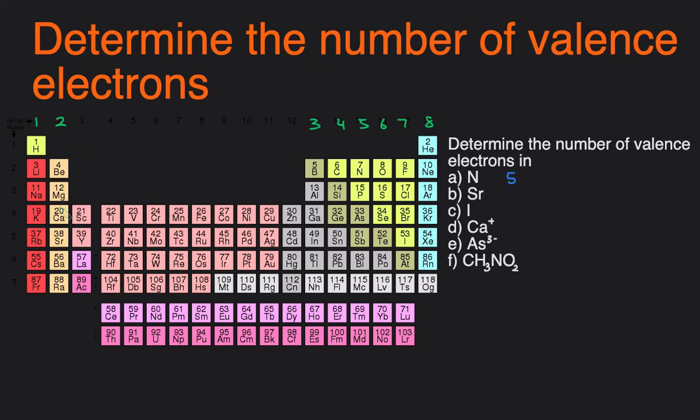Strontium is an alkaline earth metal in the second column, so it has two valence electrons. Iodide is a halogen in the column that corresponds to seven valence electrons.